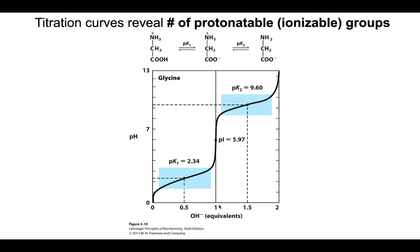One equivalent will titrate out first the ionizable group with the lower pKa — that's the one that doesn't hold on to its proton as strongly. The second equivalent titrates out the group with the higher pKa — the one that holds its proton more strongly and requires a very low proton concentration to give it up. So with a molecule like glycine with two protonatable groups, you see two pKa's. Going to half of one equivalent gives a pH of 2.34, meaning the pKa of the carboxyl group is 2.34.